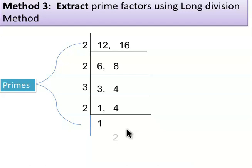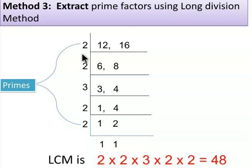2 times 1 are 2. Here, 1 is again not divisible by 2, so we will write 1 as it is. To find the LCM, take all factors. Multiplication: 2 times 2 times 3 times 2 times 2 equals 48.